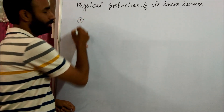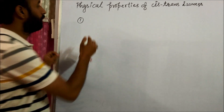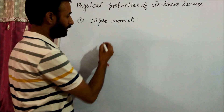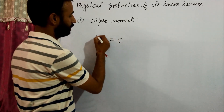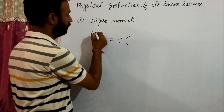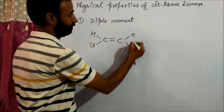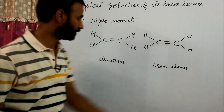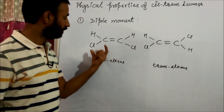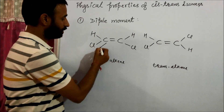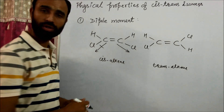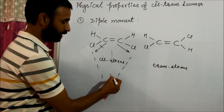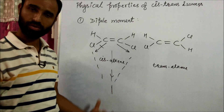The first property is dipole moment. To compare dipole moment, let us use a simple case. This is cis alkene and this one is trans. In cis alkene, C-Cl polar bonds are on the same side of the double bond. So we can apply the parallelogram law of vector addition, and the net dipole moment is downward.